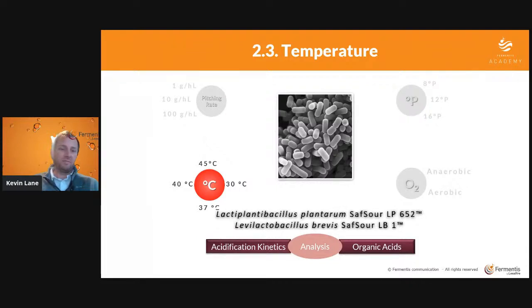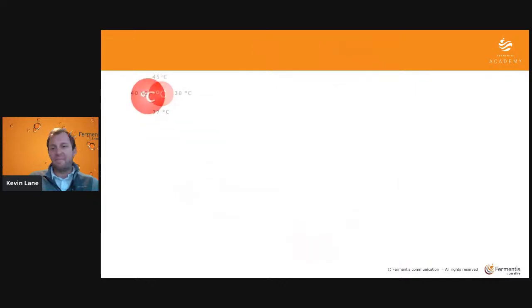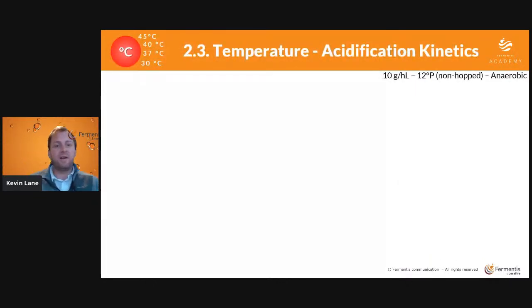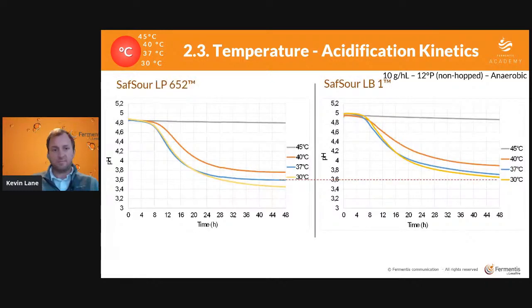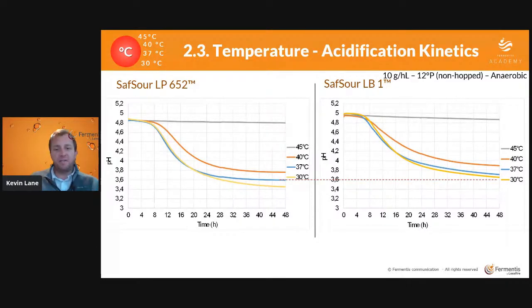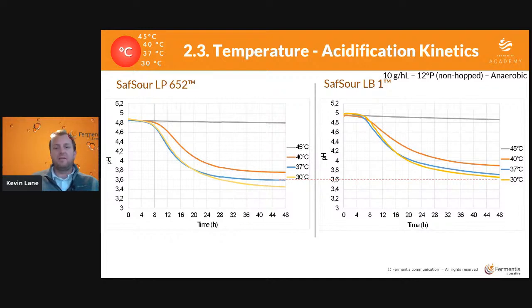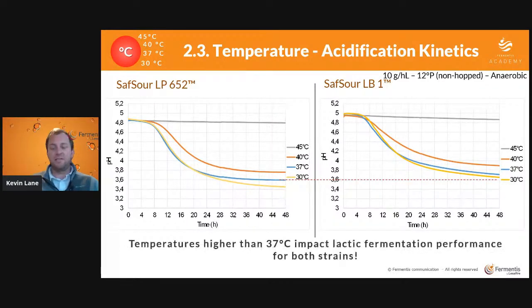Next, the difference in temperature — something I find really interesting. This covers four different temperatures: 30, 37, 40, and 45°C. Control conditions are 10 g/hL pitch rate, 12 Plato non-hopped wort, anaerobic conditions. We see that SafSour LP652, the plantarum, achieves a slightly lower pH compared to LB1. The preferable temperature for achieving the lowest pH is 30°C for both bacteria. At 37°C there's also a very significant pH drop, but at 40°C you start to deter the bacteria from producing acid, and at 45°C there is no acid production from the bacteria.